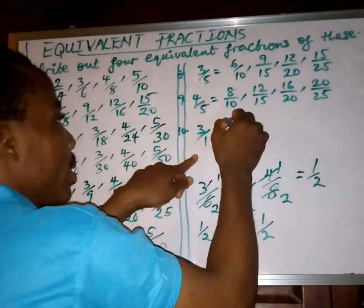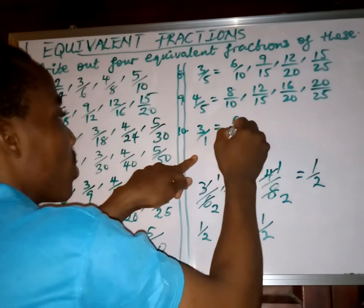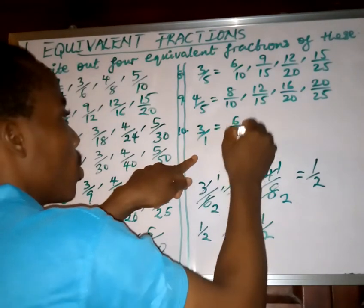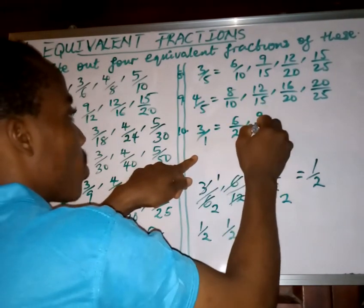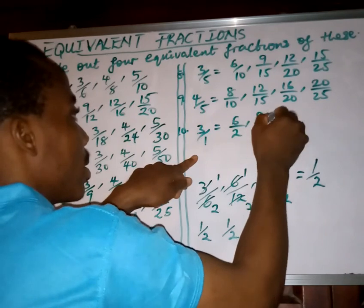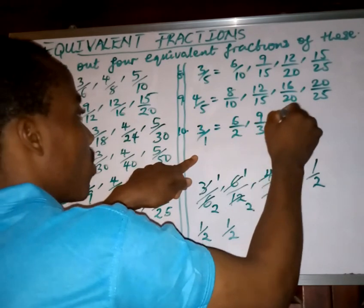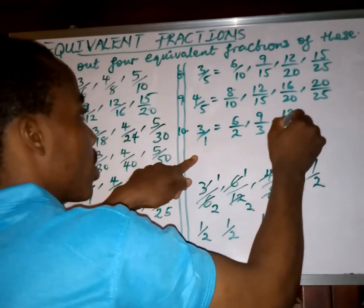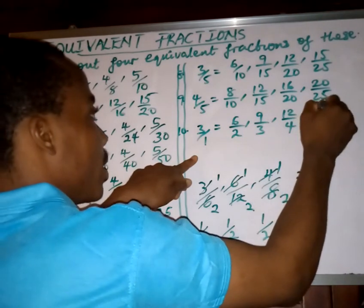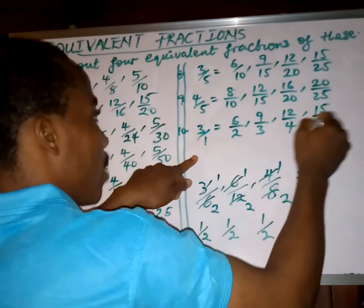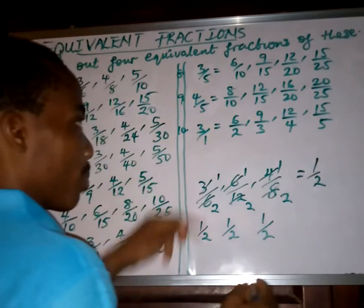For 3 over 1: multiply by 2 — 2 times 3 is 6, 2 times 1 is 2. Multiply by 3 — 3 times 3 is 9, 3 times 1 is 3. Multiply by 4 — 4 times 3 is 12, 4 times 1 is 4. Multiply by 5 — 5 times 3 is 15, 5 times 1 is 5.